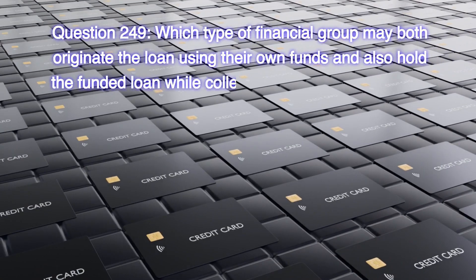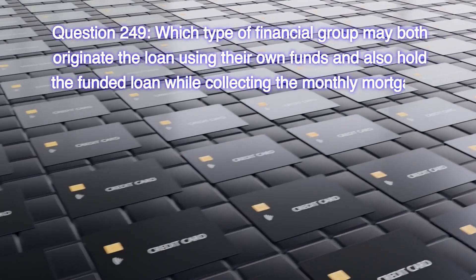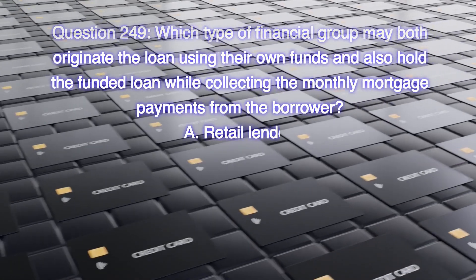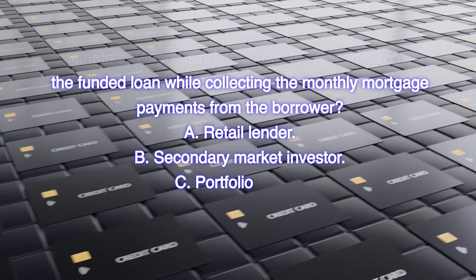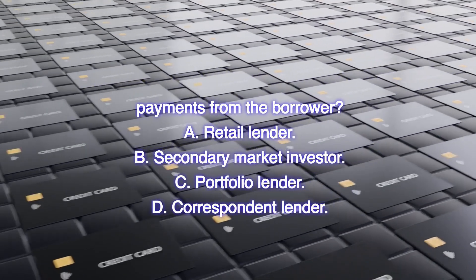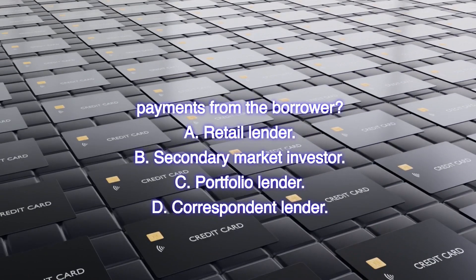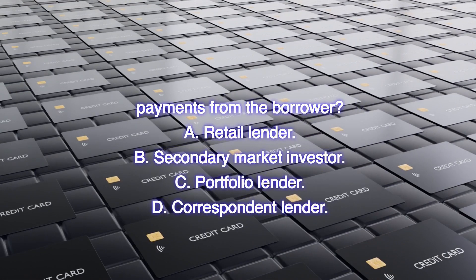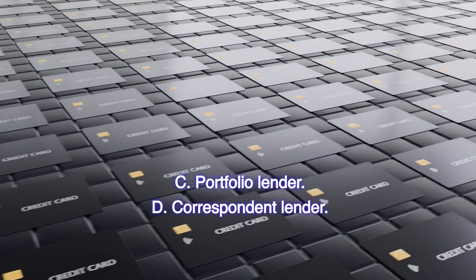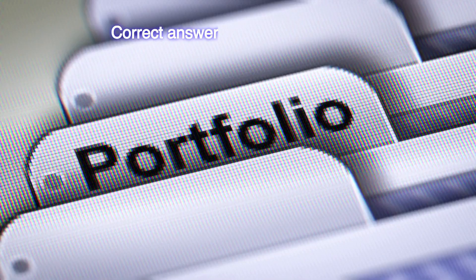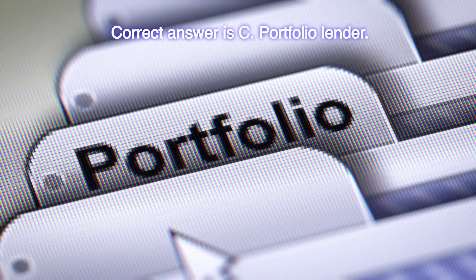Question 249: Which type of financial group may both originate the loan using their own funds and also hold the funded loan while collecting the monthly mortgage payments from the borrower? A) Retail Lender, B) Secondary Market Investor, C) Portfolio Lender, D) Correspondent Lender. Correct answer is C, Portfolio Lender.